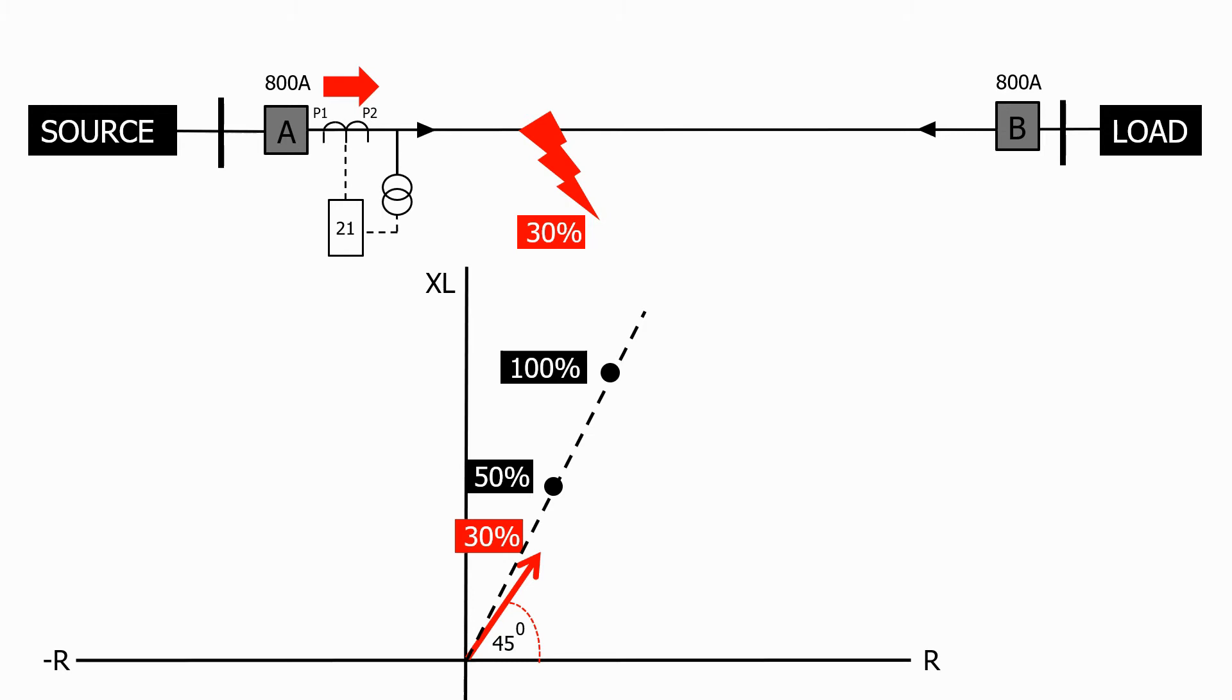And finally, at 10% of the line length, the resistance of the line now forms a large part of the line impedance value and the characteristic angle reduces substantially.